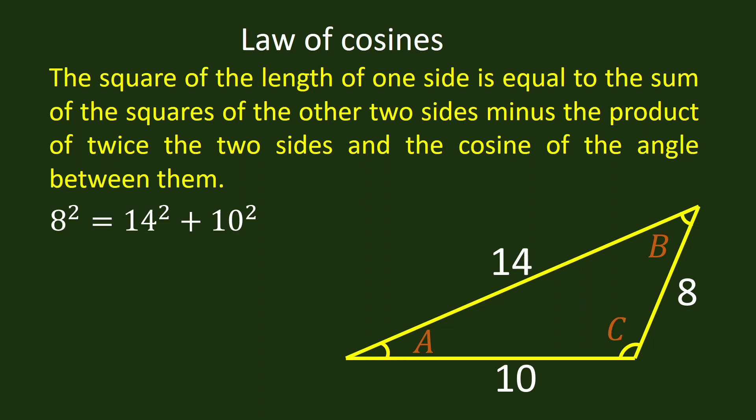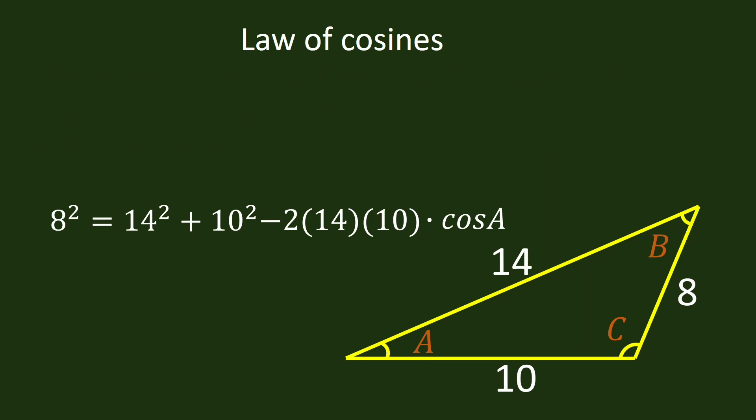This is the sum of the squares of the other two sides. The other two sides are 14 and 10. Next, we have minus 2 times 14 times 10 times cosine A. This is the translation of minus the product of twice the other two sides and the cosine of the angle between them.